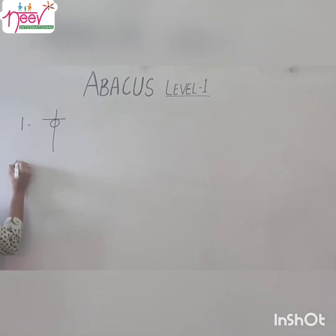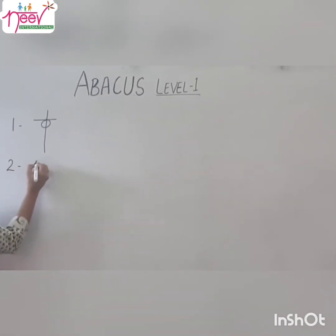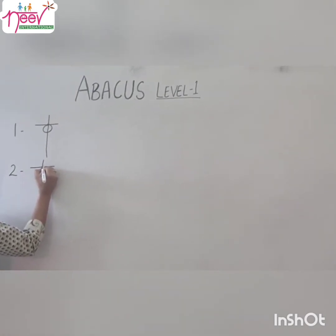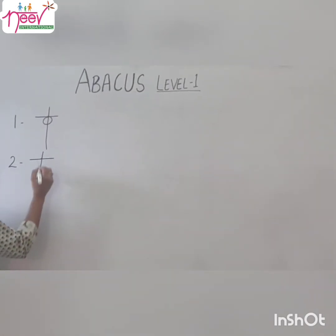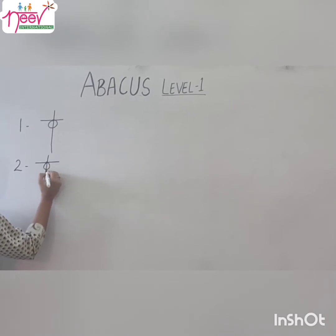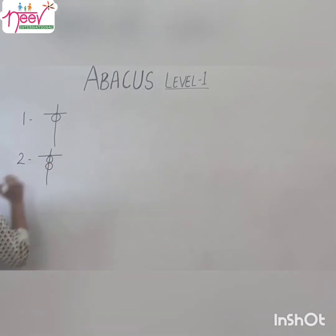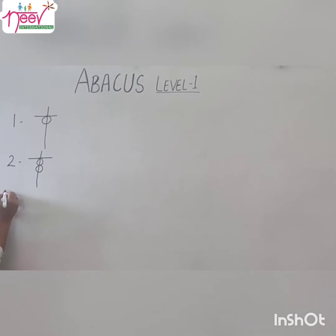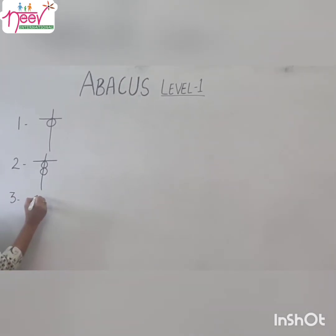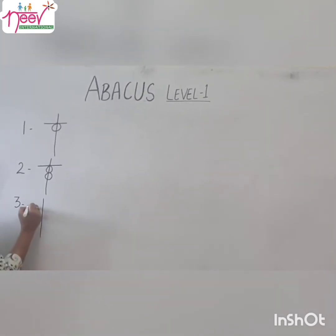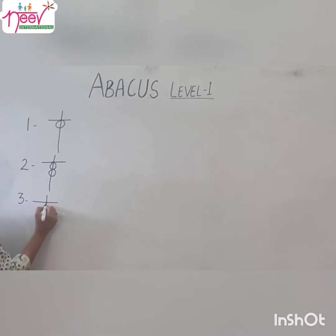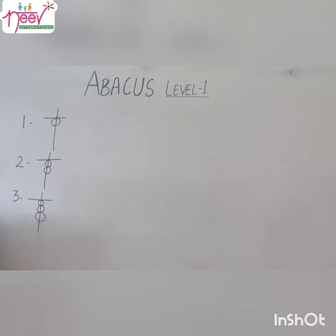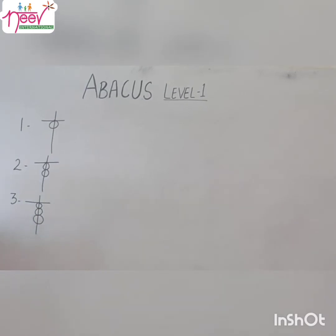Let's see how to make 2. Make 1 straw, represent it with a dot, and make 2 beads like this. This is our 2. Let's see how to make 3. Make 1 straw, then make 3 beads. This is our 3.